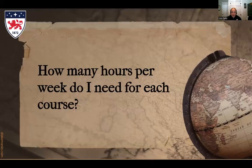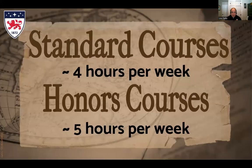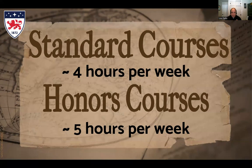First of all, it is important to think about how many hours per week you have for each course, specifically when you're trying to decide between the honors and the standard courses. Standard Social Studies classes have about four hours of schoolwork per week, including your live classes, and honors have about five, including a research component that you will work on throughout part of the school year. Of course, these hours are approximate, and there will be some weeks where it's a bit higher and some where it's a bit lower, but on average, you should plan four hours for standard and five hours for honors.